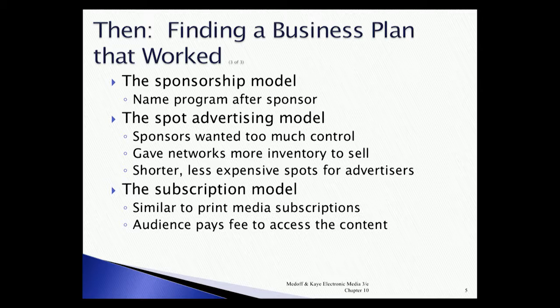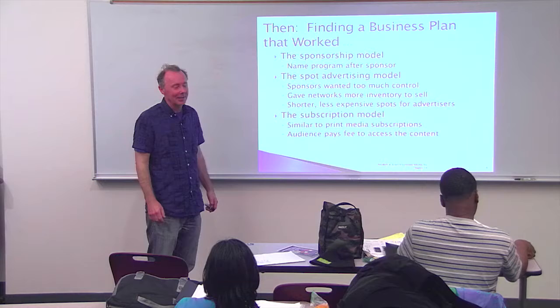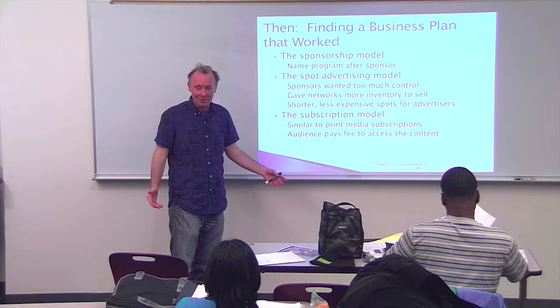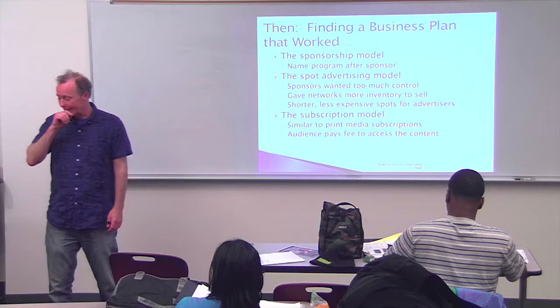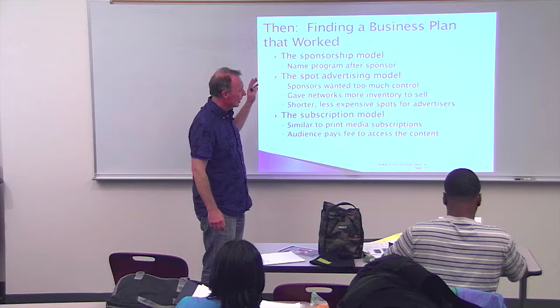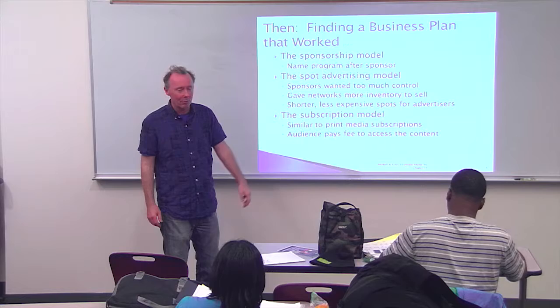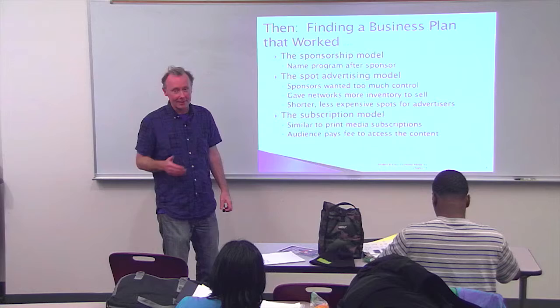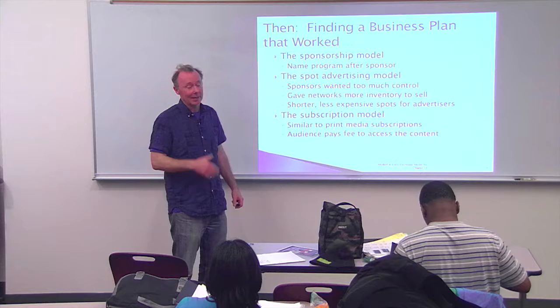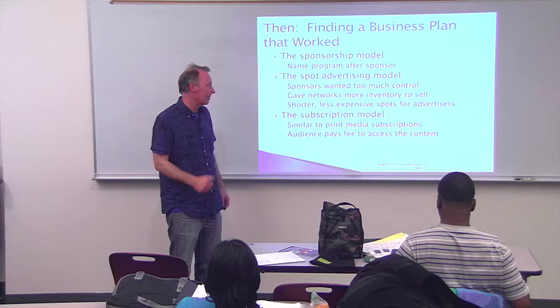The subscription model grew with the rise of cable, where original programming required subscriptions to access. You subscribe to enter the cable system, then subscribe again for premium channels like HBO — sometimes two levels of subscription. Netflix's subscription model works similarly. The challenges differ significantly from spot advertising: a network using spot ads watches ratings week-by-week because they impact ad sales and show survival. A subscription service like HBO constantly has people coming in and leaving — what the business calls churn. The goal is getting new subscribers to replace those churning out.